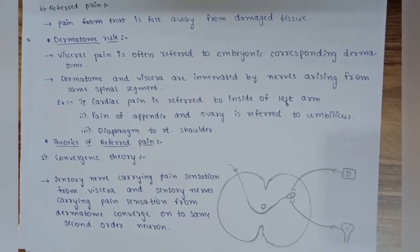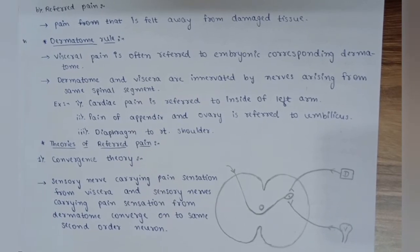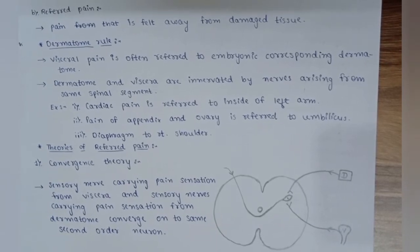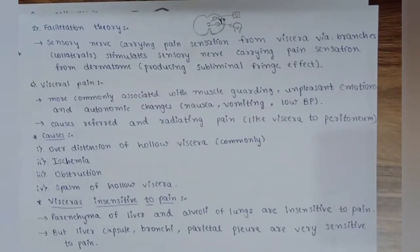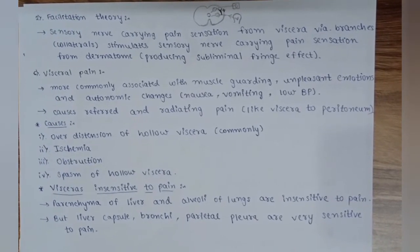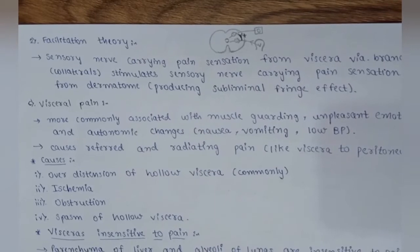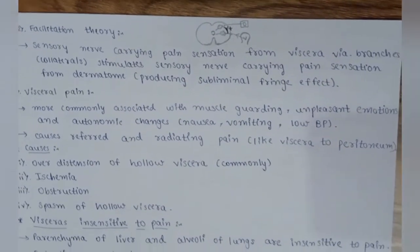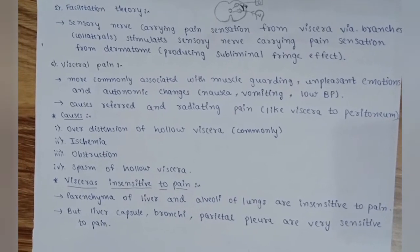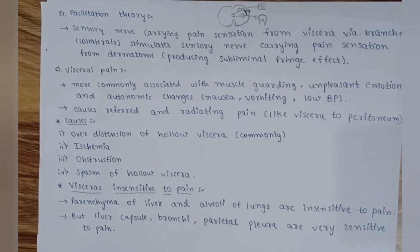Theories of referred pain: first, the convergence theory — sensory neurons carrying pain from viscera and sensory neurons carrying pain from the dermatome converge onto the same second-order neuron. Second, the facilitation theory — sensory neurons carrying pain from viscera via collaterals stimulate sensory neurons carrying pain from the dermatome, producing a subliminal fringe effect.